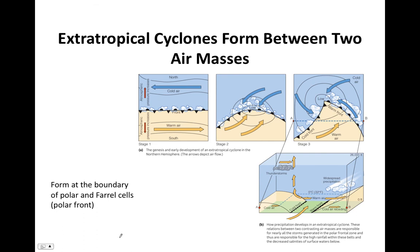An extratropical cyclone forms between two air masses. Here we have a warm air mass to the south and a cold air mass to the north, with a front between them. A low pressure anomaly develops along that front, and warm and cold air begin to converge into it. As the air rotates, a cold front and a warm front develop. A warm front is where warm air is advancing into a cold air mass; a cold front is where cold air is advancing into a warm air mass.